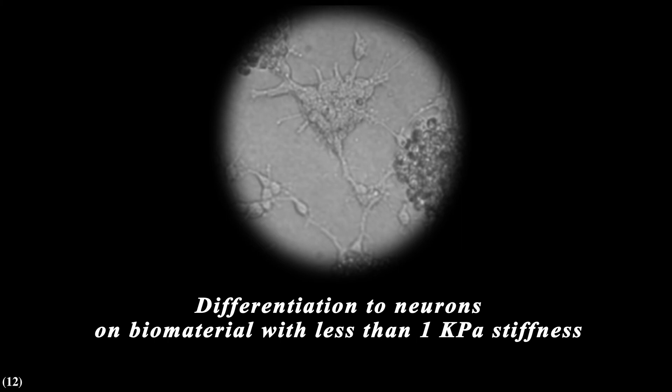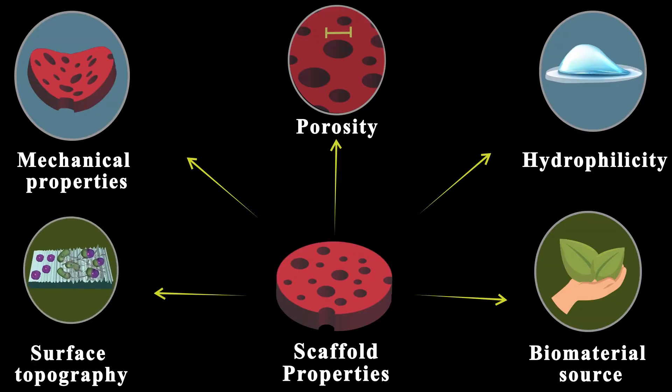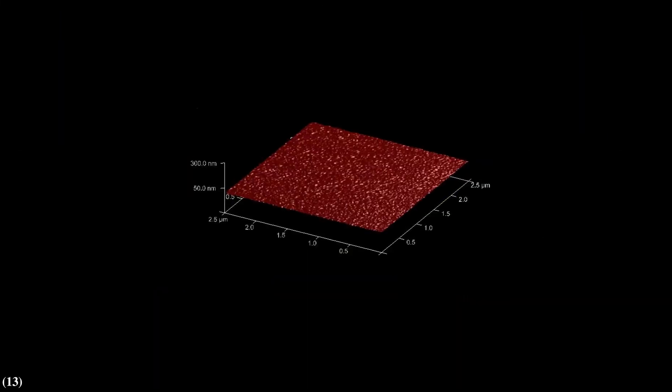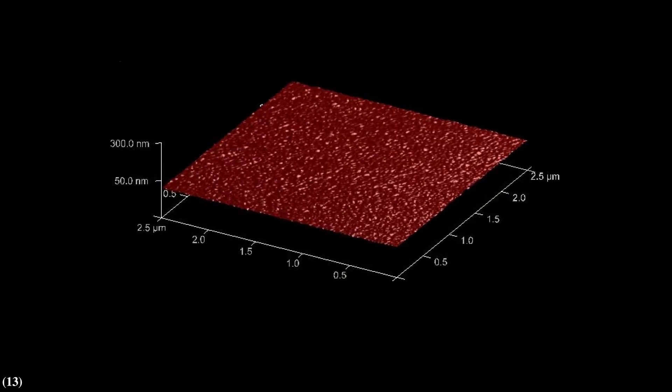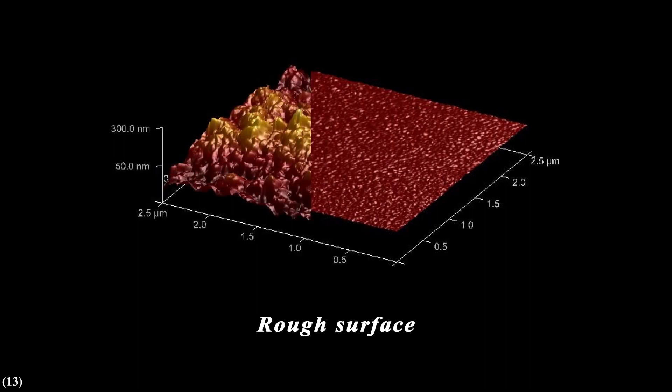Besides mechanical properties, cells can respond to the topographical structure of the biomaterial surface, and they can modulate their alignment and orientation along the surface. By topography, I mean forms and features of the surface of the biomaterial. For example, it can be a rough or smooth surface, or it can have different patterns.